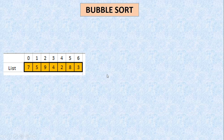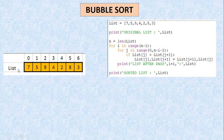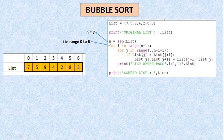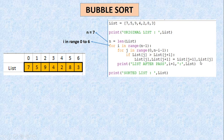तो एक program देख लेते हैं — जिसमें suppose मैंने यह list initialize कर ली है। Same list ली है मैंने, मैंने original list को print किया है, then मैंने length find out कर ली n में डाल ली। तो n की value हो गई 7। अब मैं क्या कर रही हूँ — for i in range(n-1), मतलब i in range 0 से 6 तक मेरा यह loop चलेगा, और उसके अंदर मैं एक और loop चला रही हूँ for j in range(0, n-1-i)। यहाँ मैं basically क्या कर रही हूँ — if list[j] > list[j+1], मतलब मैंने adjacent two elements को compare किया, जो बड़ा है उसको मैं पीछे ले जाऊँगी। यहाँ पर list[j], list[j+1] = list[j+1], list[j] — multiple assignment है single statement में।